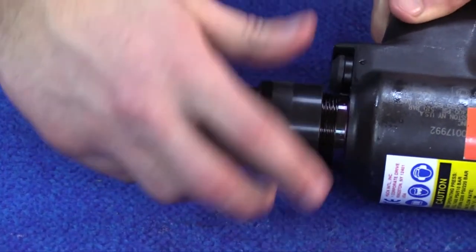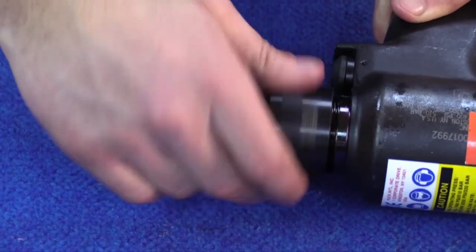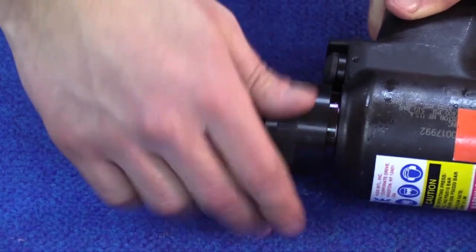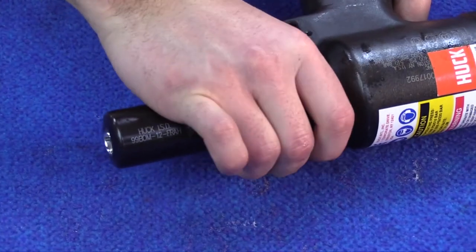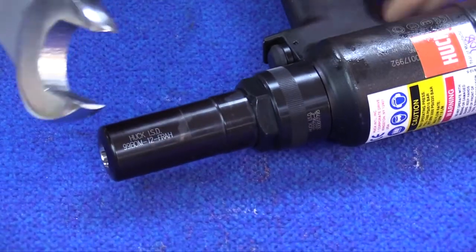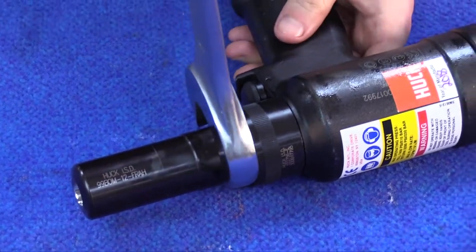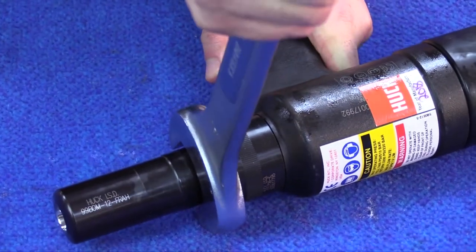Slide retaining ring and thread onto the front of the tool. Thread retaining nut on until it is tight. Secure with a wrench.